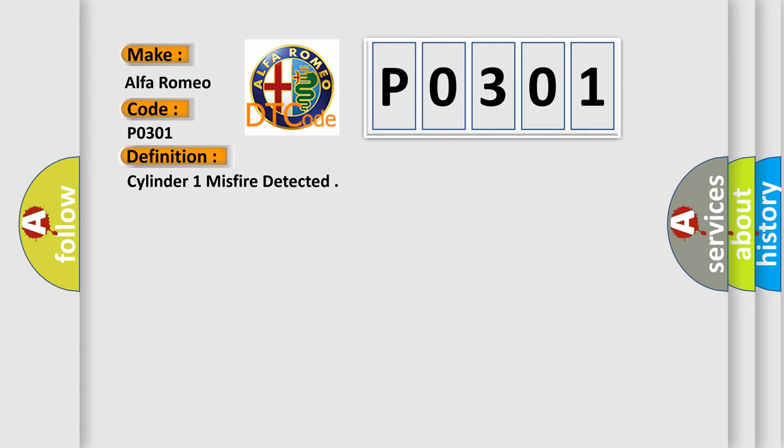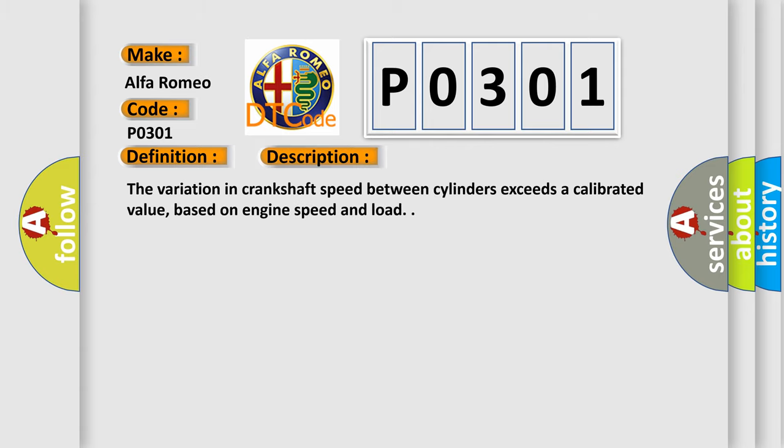And now this is a short description of this DTC code. The variation in crankshaft speed between cylinders exceeds a calibrated value, based on engine speed and load.